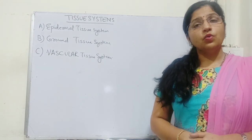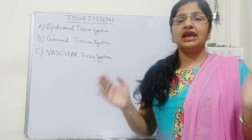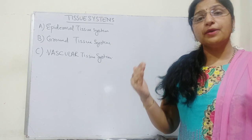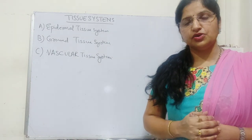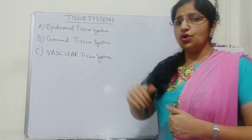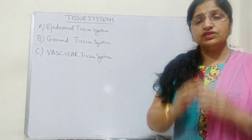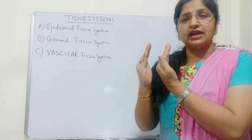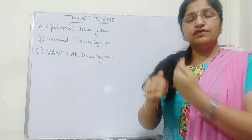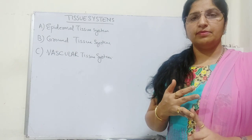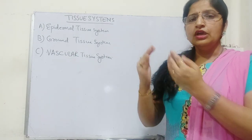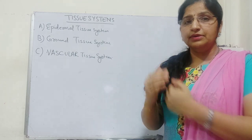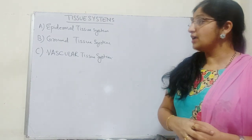The epidermal tissue system covers the outermost lining of the plant body and includes different appendages arising from this epidermis. The vascular tissue system forms the innermost, centrally located part of the plant body, consisting of xylem and phloem arrangements in the form of different bundles. Any tissue other than epidermis and vascular tissue — lying in between these two — is called the ground tissue system.